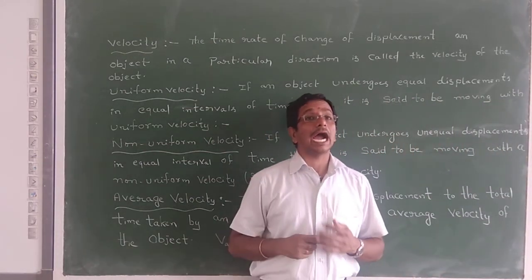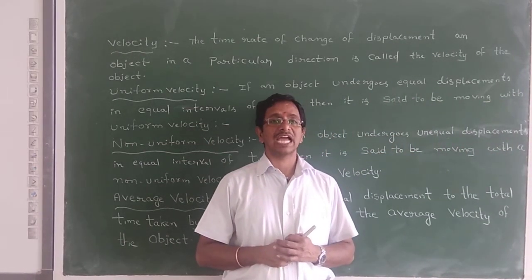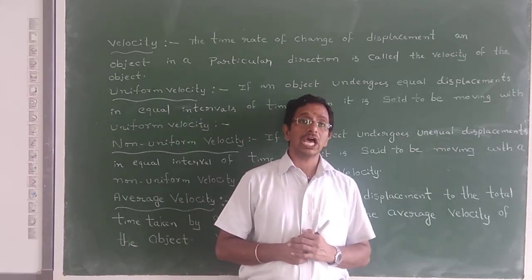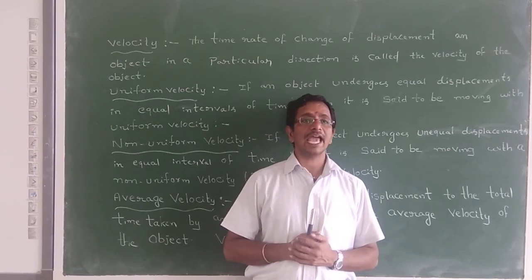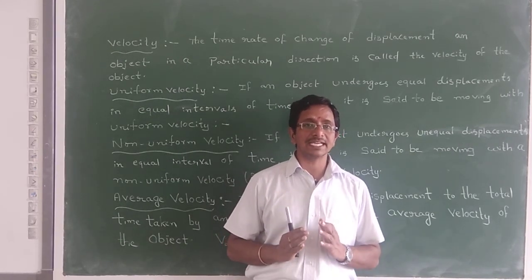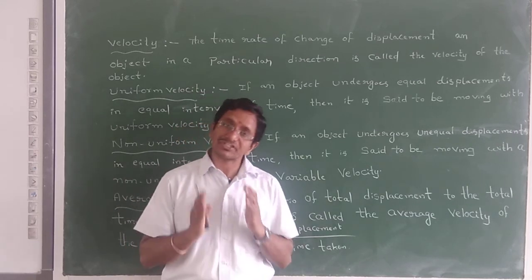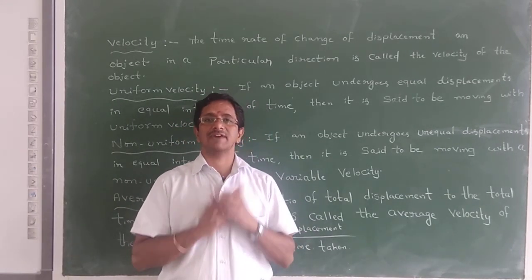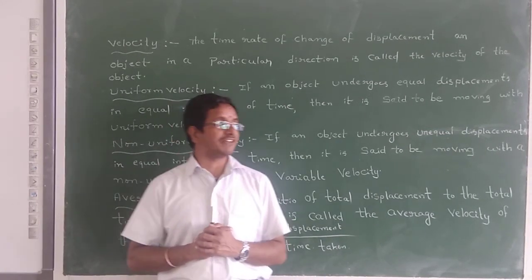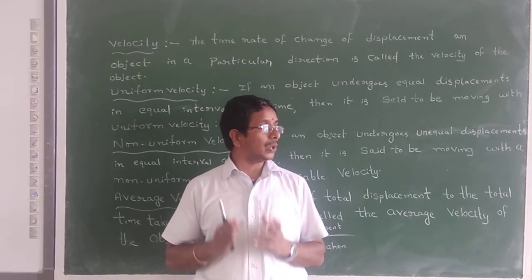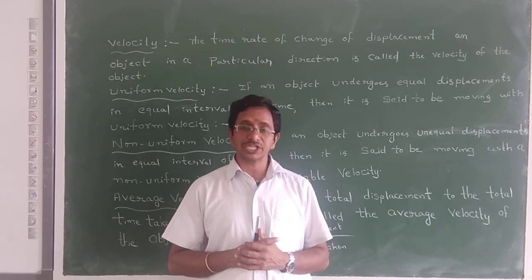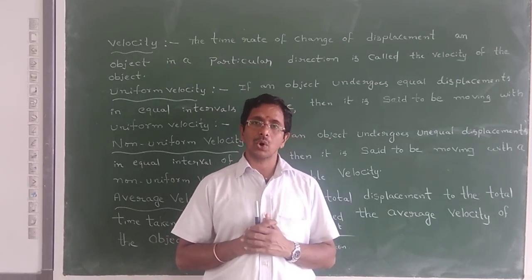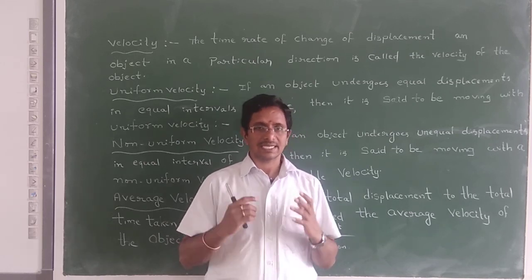Now I want to explain about Instantaneous Velocity. When an object is travelling with variable velocity, its velocity at a given instant of time is called instantaneous velocity, which can be defined as: v equals limit as Δt tends to 0 of Δr by Δt, that is equal to dr by dt.